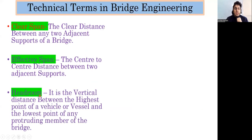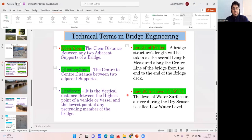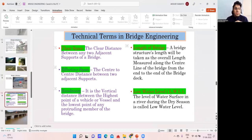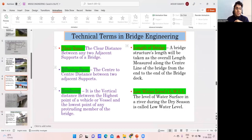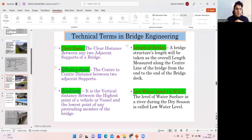The next term is headroom — it is the vertical distance between the highest point of a vessel or vehicle and the lowest point of any protruding member of the bridge. This applies in vehicular underpass bridges where vehicles pass beneath the bridge structure.